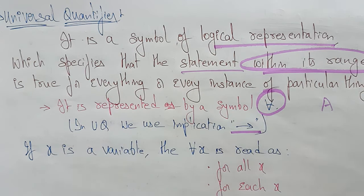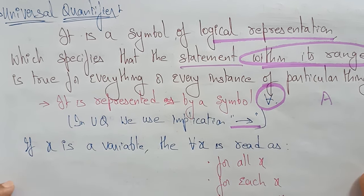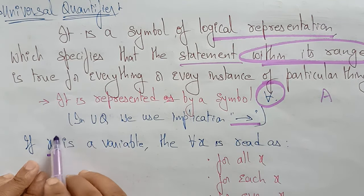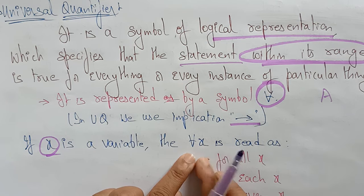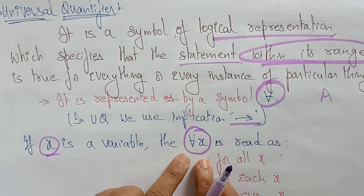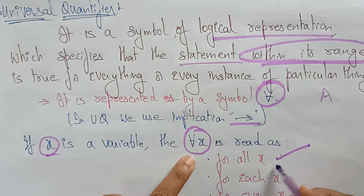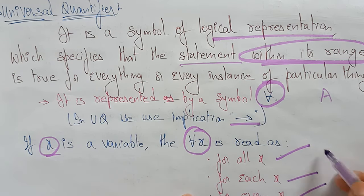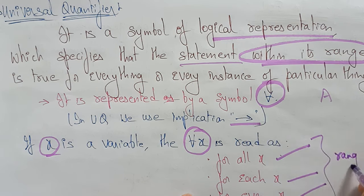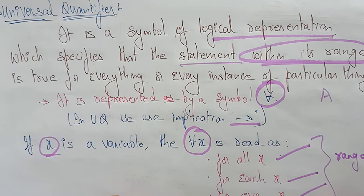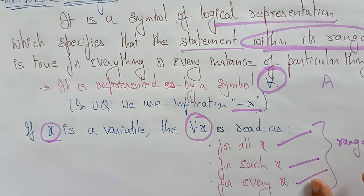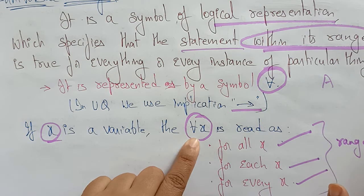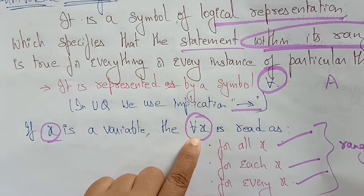In the universal quantifier, we use the implication symbol. If x is a variable, then 'for all x' is read as 'for all x,' 'for each x,' or 'for every x' that is present within the range. Whenever these types of statements appear, you represent that variable with the universal quantifier.